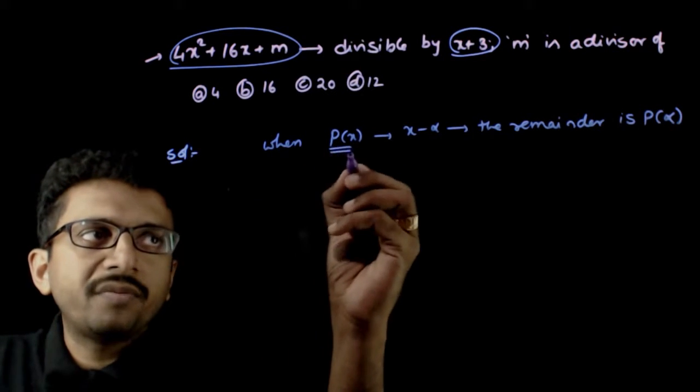So now which theorem can be used here? In this question it is given that this expression is divisible by x plus 3, that is, x plus 3 is a factor of this.